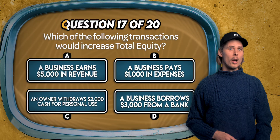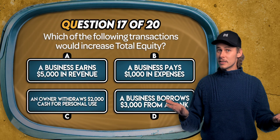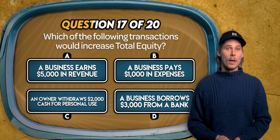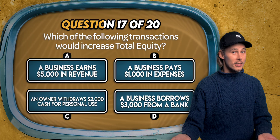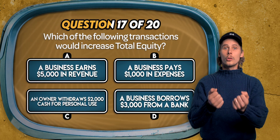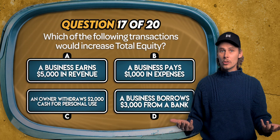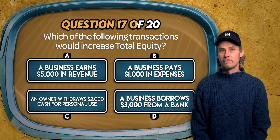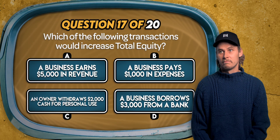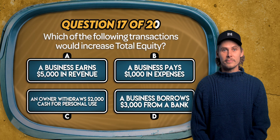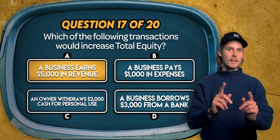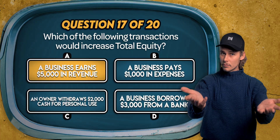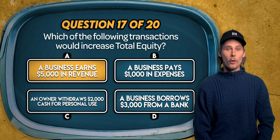Question 17. Which of the following transactions would increase total equity? A business earns $5,000 in revenue, a business pays out $1,000 in expenses, an owner withdraws $2,000 cash for personal use, or the business borrows $3,000 from a bank? The answer is A. Revenue increases net profit, and net profit flows into retained earnings, which is part of equity.